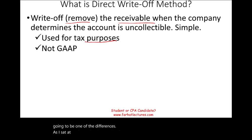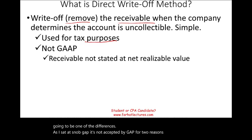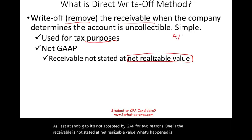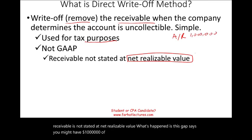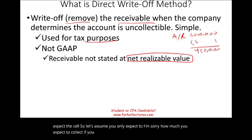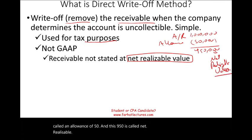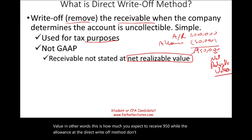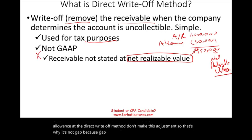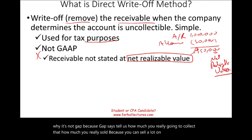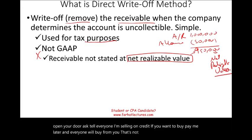As I said, the direct write-off method is not GAAP for two reasons. First, the receivable is not stated at net realizable value. GAAP says if you have a million dollars in receivables but only expect to collect $950, you must deduct an allowance of $50 — making $950 the net realizable value. The direct write-off method doesn't make this adjustment. GAAP wants you to report how much you're really going to collect, not just how much you sold on credit.